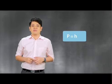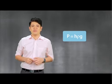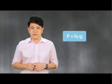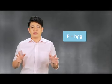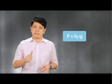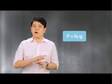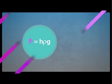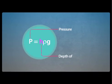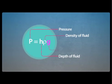Now, a very important formula is P equals H rho G. This formula is specifically for pressure in fluids. Liquids and gases are all fluids. P represents pressure, H is the depth of fluid, rho is the density of fluid, and G is gravity. Gravity is a constant — it is always 10.